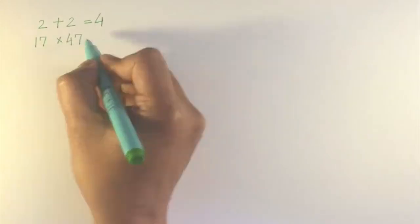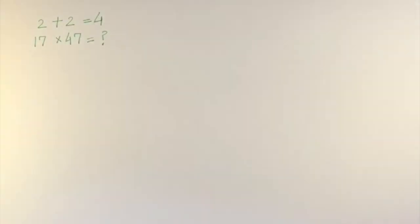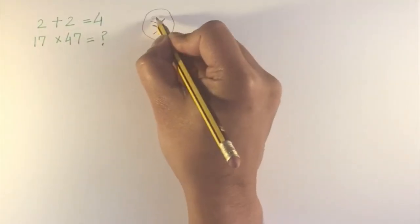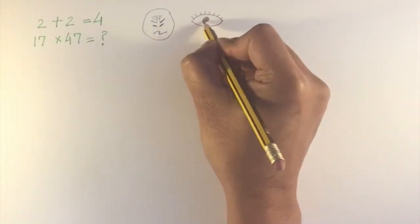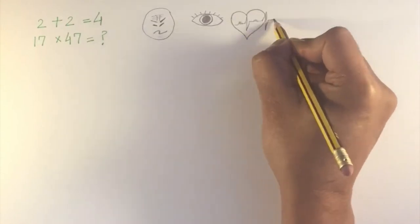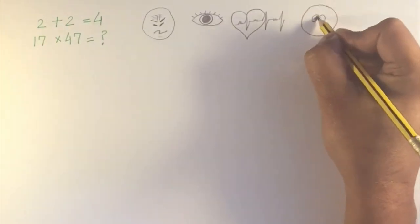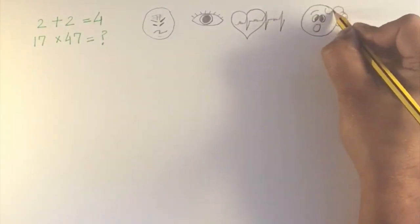But what if we asked you, how much is 17 times 47? You could solve it, but with some effort. In doing so, your muscles will tense, your pupils will dilate, and your heart rate will increase. You may not become aware of these subtle physiological changes, but they happen whenever you think hard.